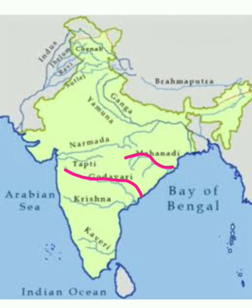Next you can see the Krishna river, which moves through Maharashtra, then Karnataka and Andhra Pradesh — these are the portions of the Krishna river. Below that we have the Kaveri river, covering important states like Karnataka and Tamil Nadu. These are all the main important rivers you have to study in the Peninsular Plateau.